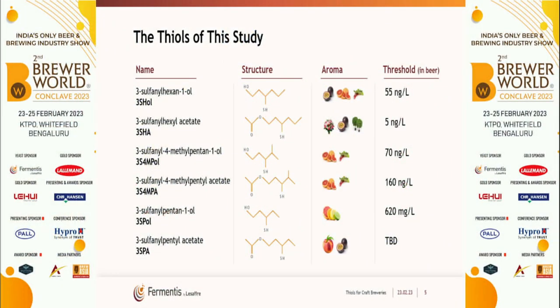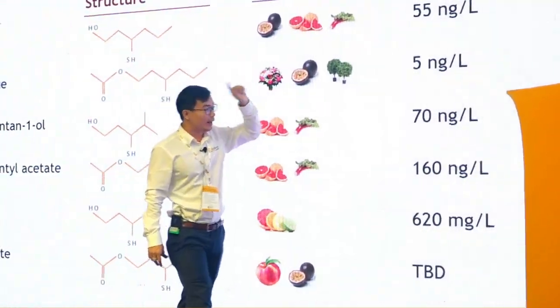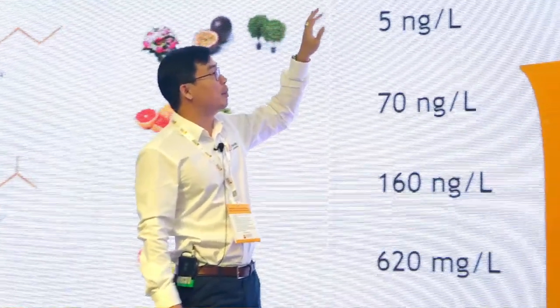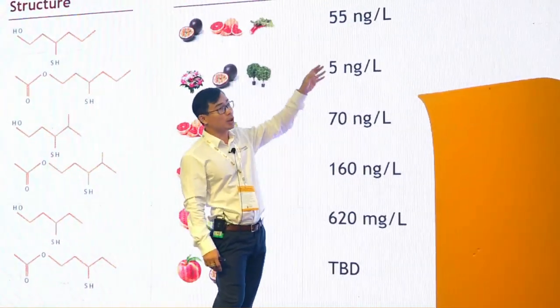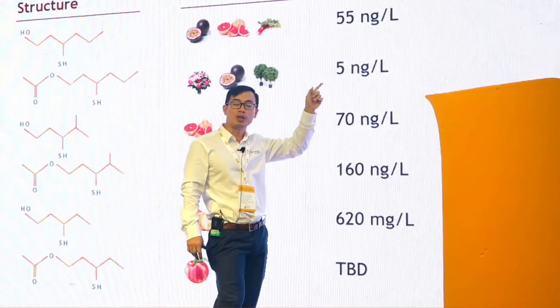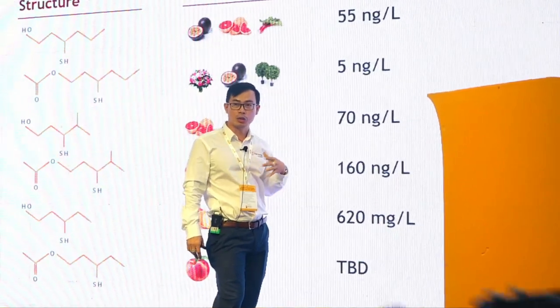Now for the chemistry: these very important thiols have structures shown here. The abbreviations represent different thiol compounds, each contributing specific aromas — floral, passion fruit, citrusy. Very importantly, their threshold is extremely low — in the nanogram per liter concentration range. You need to reach above threshold for that specific aroma to be perceived. For example, 5 nanograms per liter is enough for one of these compounds.